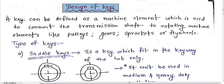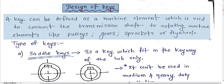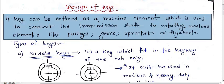To design a key, first we need to understand the basic definition of a key. A key can be defined as a machine element which is used to connect the transmission shaft to rotating machine elements like pulleys, gears, sprockets, or flywheels. The basic application of a key is to connect a shaft to a machine element for power transmission.